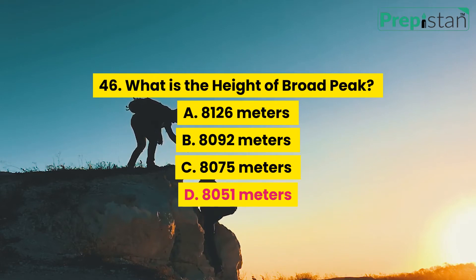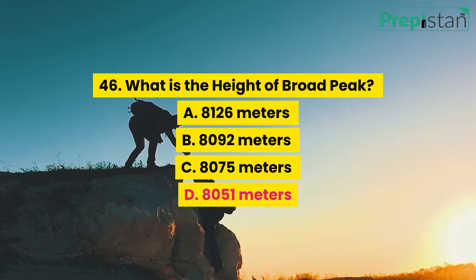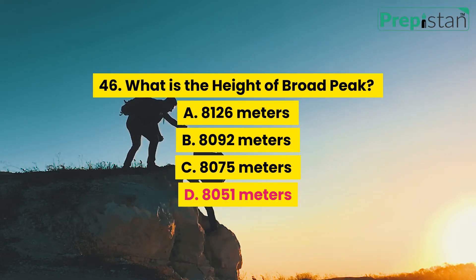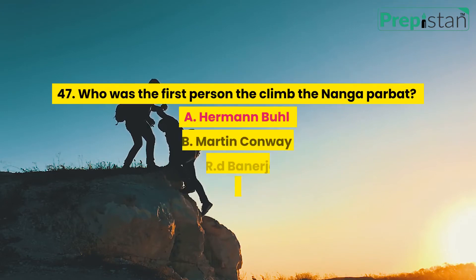Question 46: What is the height of Broad Peak? A. 8,126 meters, B. 8,092 meters, C. 8,075 meters, D. 8,051 meters.